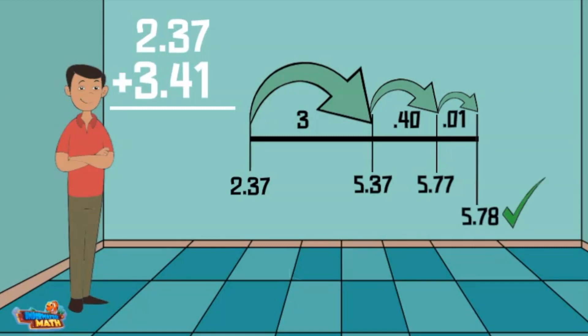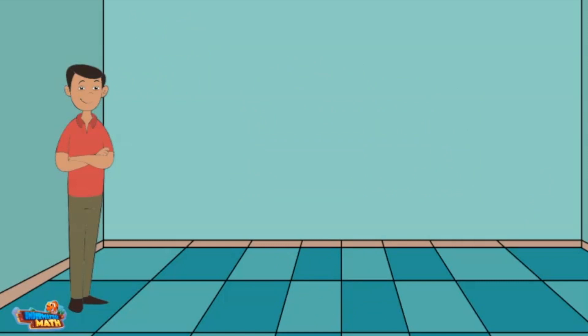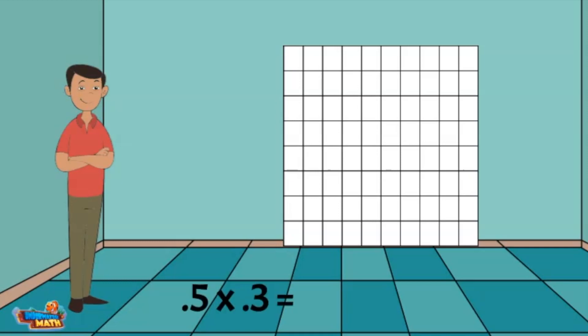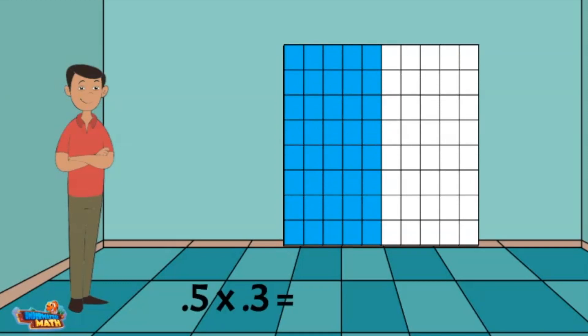We are ready to move to the next operation. It is time to multiply. Once again we will use a base ten block model to help us. In this case, the group of 100 equals one whole. The problem asks to multiply five tenths by three tenths. I start by shading in five tenths vertically like this.